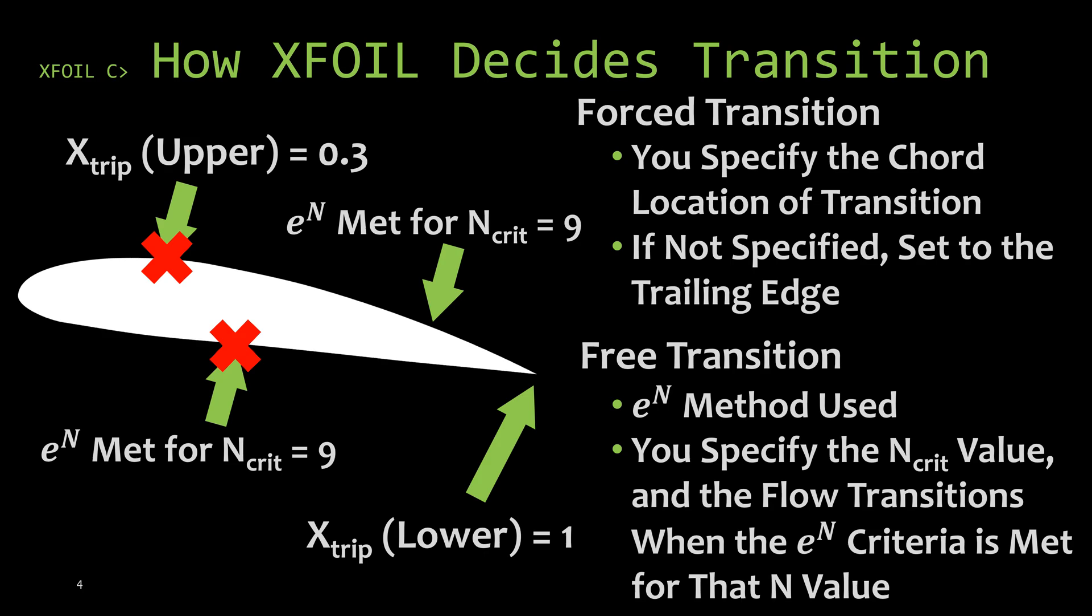There are two ways that the boundary layer can be tripped from laminar to turbulent flow in XFOIL. The first is a forced transition and this is just how it sounds. You specify where you want it to trip and at that location, XFOIL will actually trip the flow for you. If you don't specify where you want it to trip, it's automatically set to trip at the trailing edge.